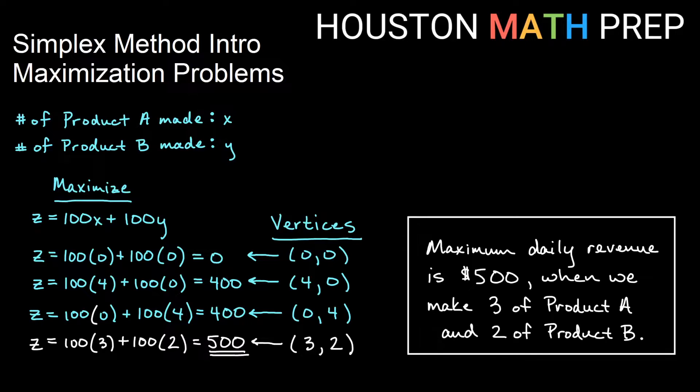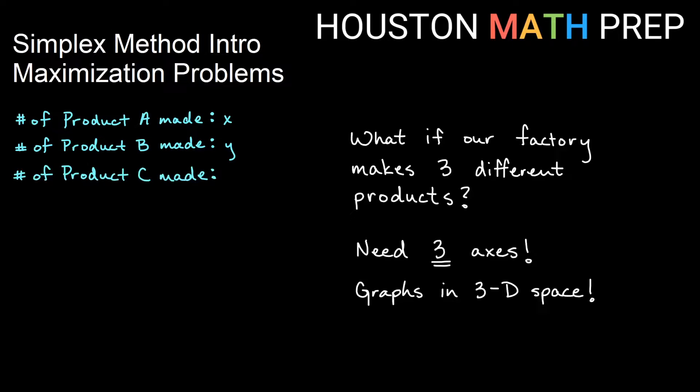This method is great for doing this with just a couple of variables, with just a couple of constraints. The problem becomes what happens when our situation isn't really quite that basic. What if our factory makes more than two products? What if we make three products? Well, I would need another variable. So I had an x-axis and a y-axis because I was making two products. We would need three axes if we had a third product. We would also need to graph that in three-dimensional space.